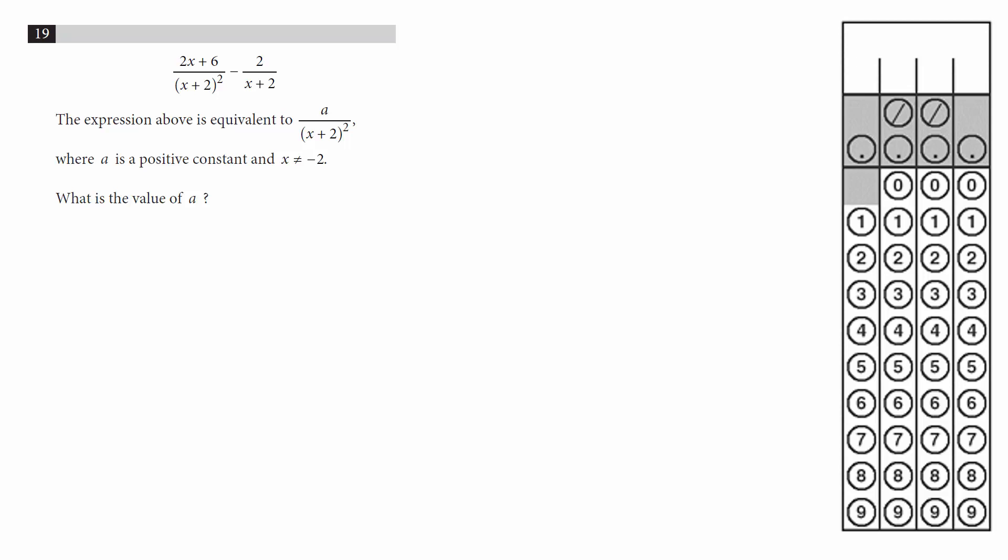So, if all of this is equal to that, let's rewrite it as one equation. 2x plus 6 over x plus 2 all squared minus 2 over x plus 2. If all of that is equal to a over x plus 2 squared, now we need to figure out what is the value of a.